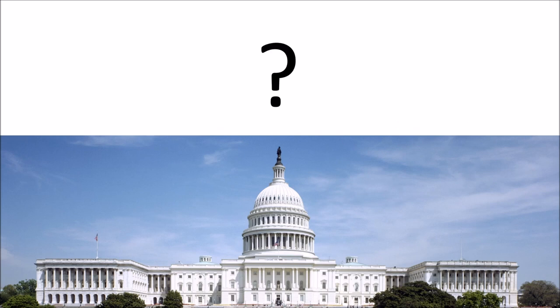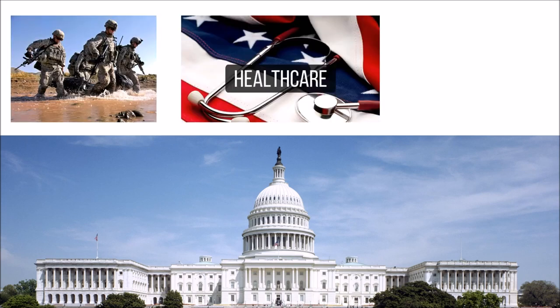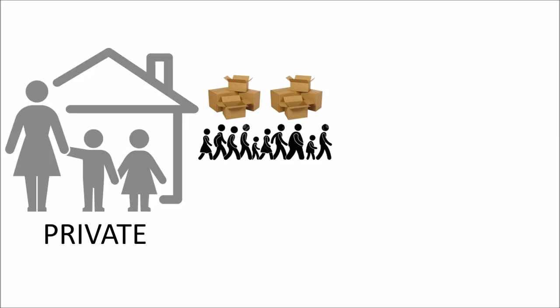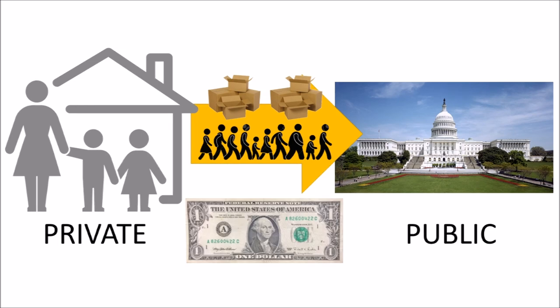We know the government doesn't need money to spend, so why does it tax? Governments exist to provide public services like the military, healthcare, and transportation networks. This means the government has to provision itself by transferring goods and services from private to public domain. Today, this is done with a monetary system.